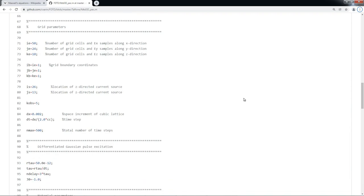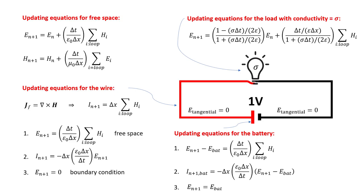But still, I had to modify the updating equation for the field on the battery, wires, and the light bulb, basically to meet the boundary condition for the perfect conducting wire, as well as solving Maxwell's equations for a load with some finite conductivity.